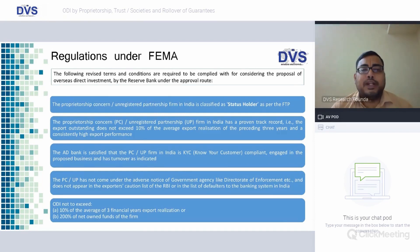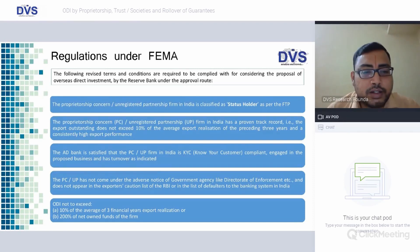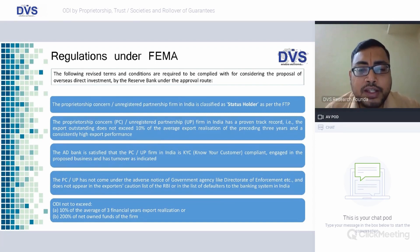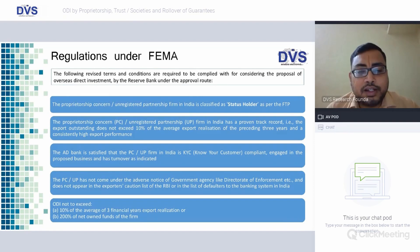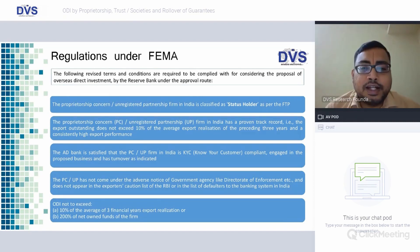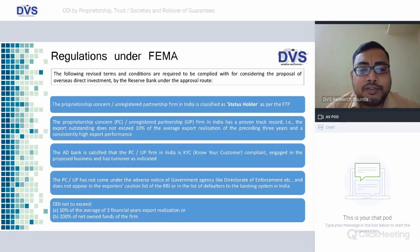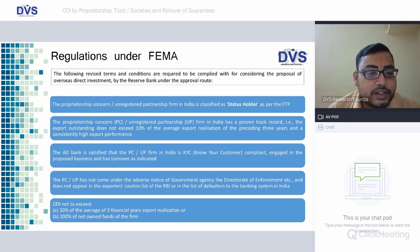The conditions specified in Regulation 19A: the first and foremost condition is that the proprietorship concern or the unregistered partnership firm in India must be classified as a status holder as per the FTP — that is, the Foreign Trade Policy. The regulation refers to the Foreign Trade Policy, and the entity, whether a proprietary concern or a partnership firm, should have been classified as a status holder under the FTP.